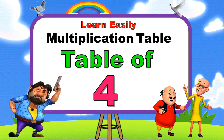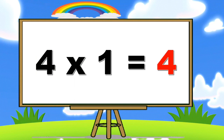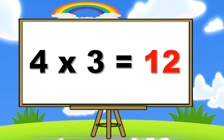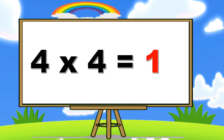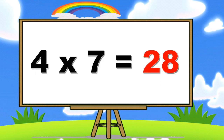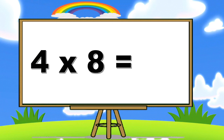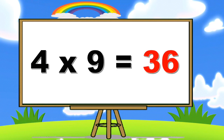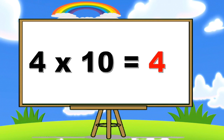Table of four. Four ones are four. Four twos are eight. Four threes are twelve. Four fours are sixteen. Four fives are twenty. Four sixes are twenty-four. Four sevens are twenty-eight. Four eights are thirty-two. Four nines are thirty-six. Four tens are forty.